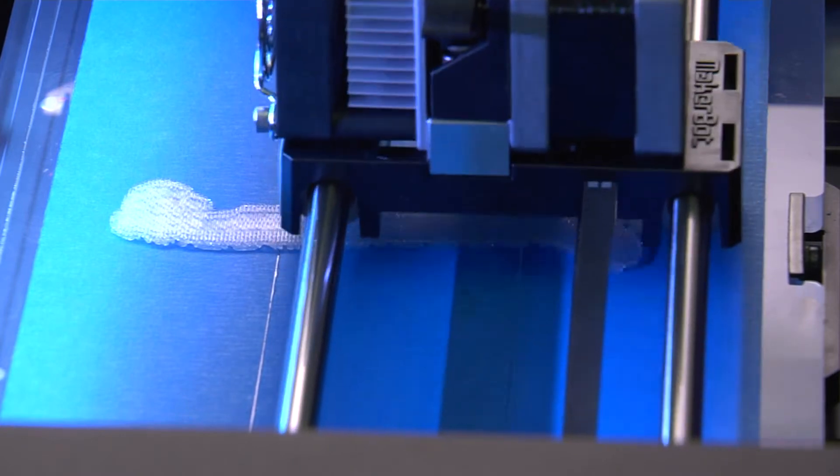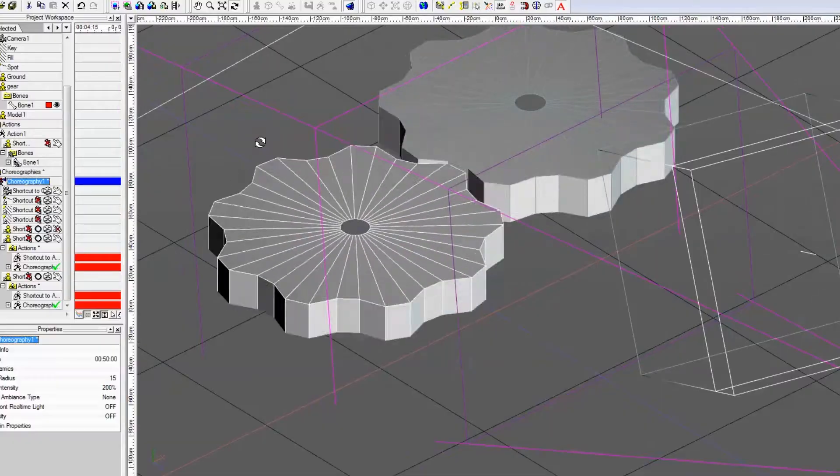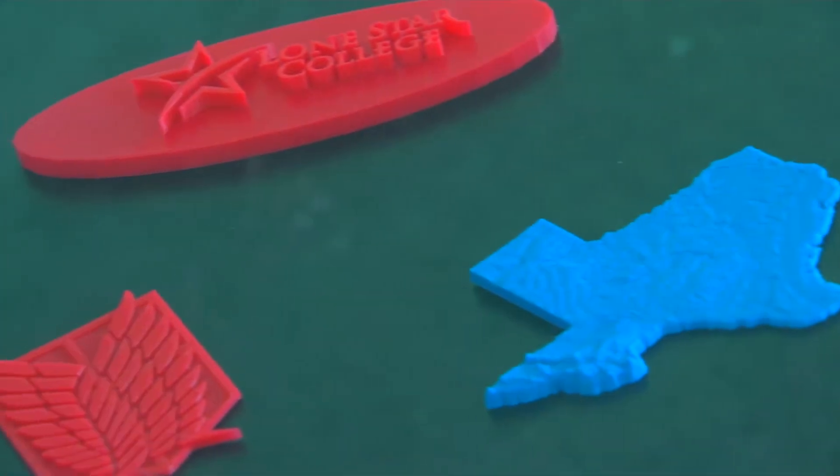3D printing is being used in industries like engineering where we can print machine parts and see how they work together. It's used in the arts as students are learning how to use various design programs to design projects for 3D printers and they can actually see them printed here in the library.